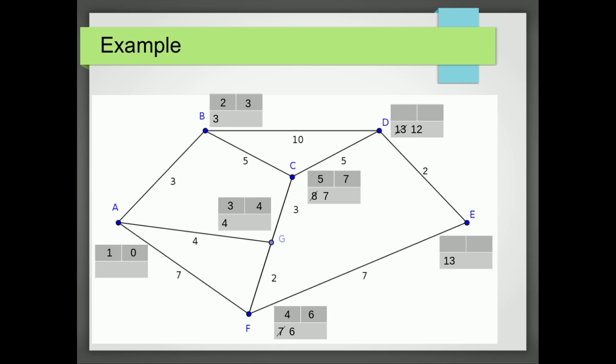Which is the smallest value? Well, it's the 12. So that's a final value. It's the sixth place we've labeled. Where can we get to from D? It's E. 12 plus 2 is 14. 14 is not better than 13. So we don't update. The only place that left is E. So we label that with 13. Final value of 13. And it's the seventh value that we've given.